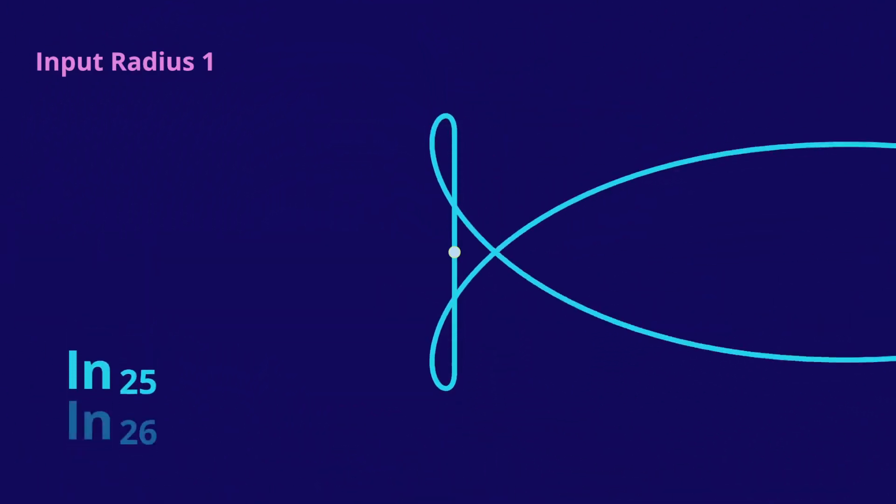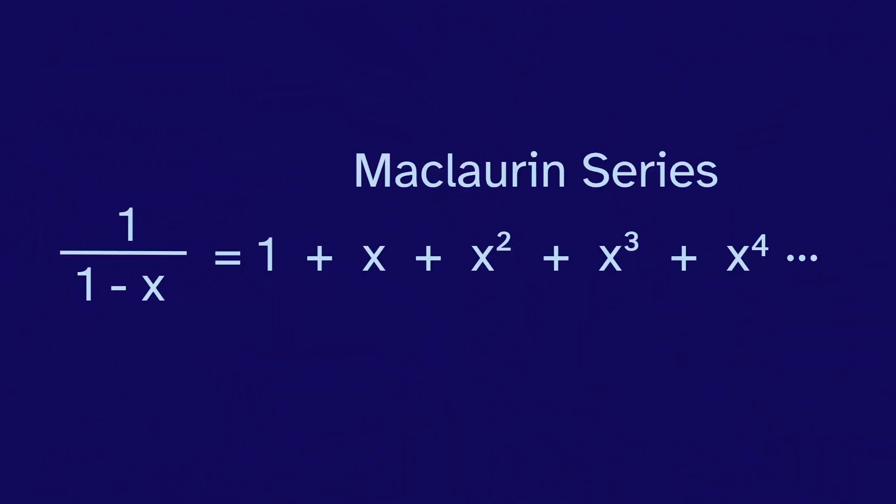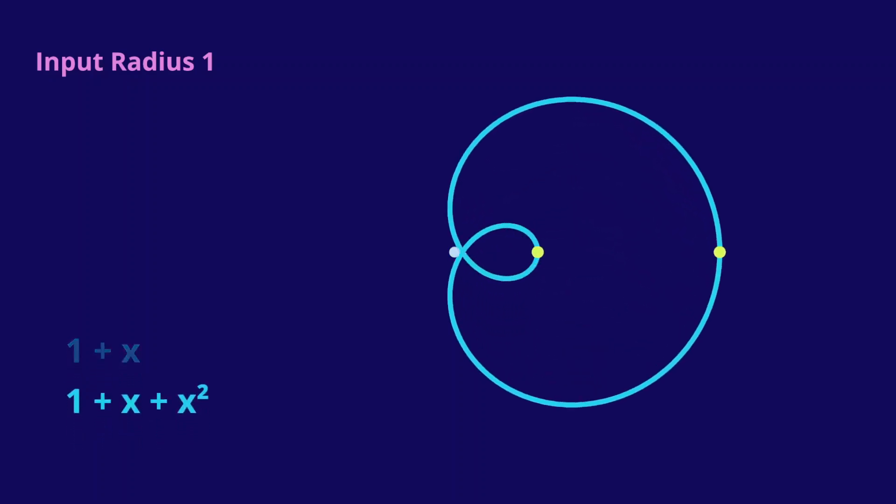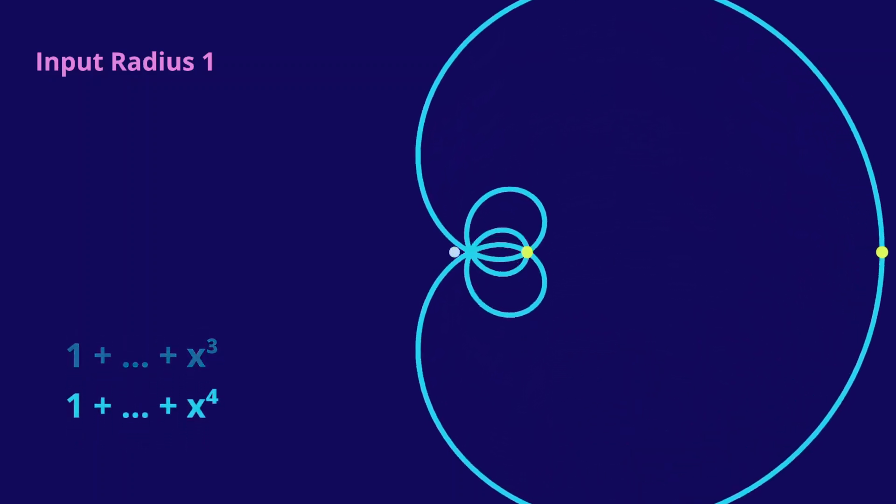We also get a sort of repetition with 1 over 1 minus x, which has a very simple Maclaurin series. This loops in on itself over and over and over.